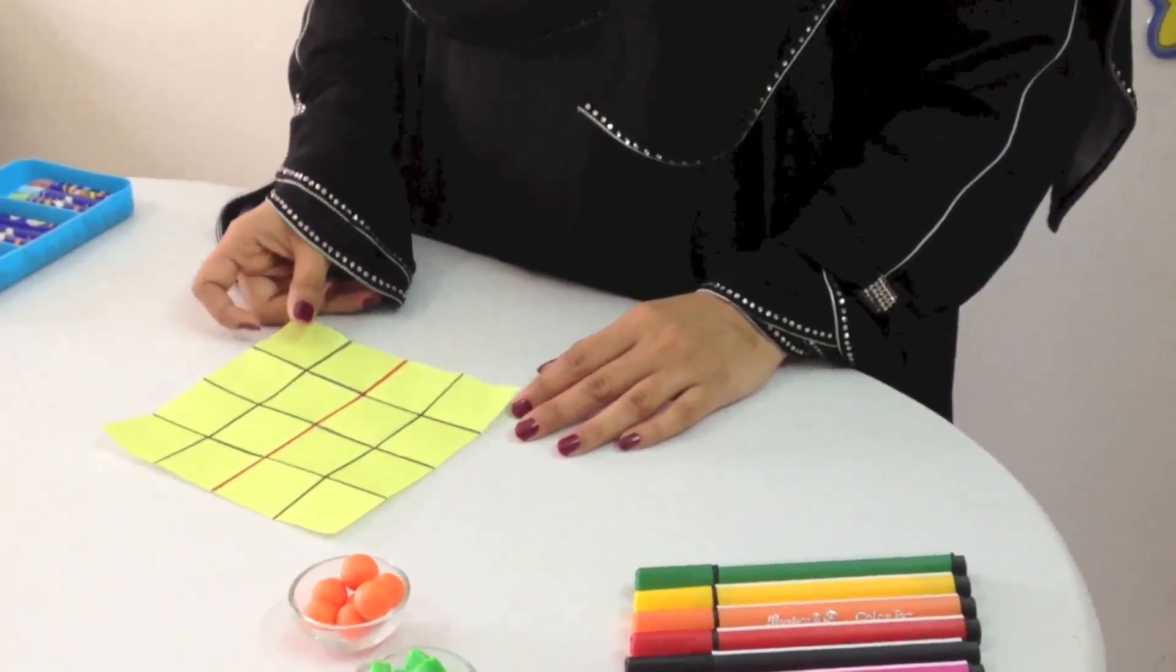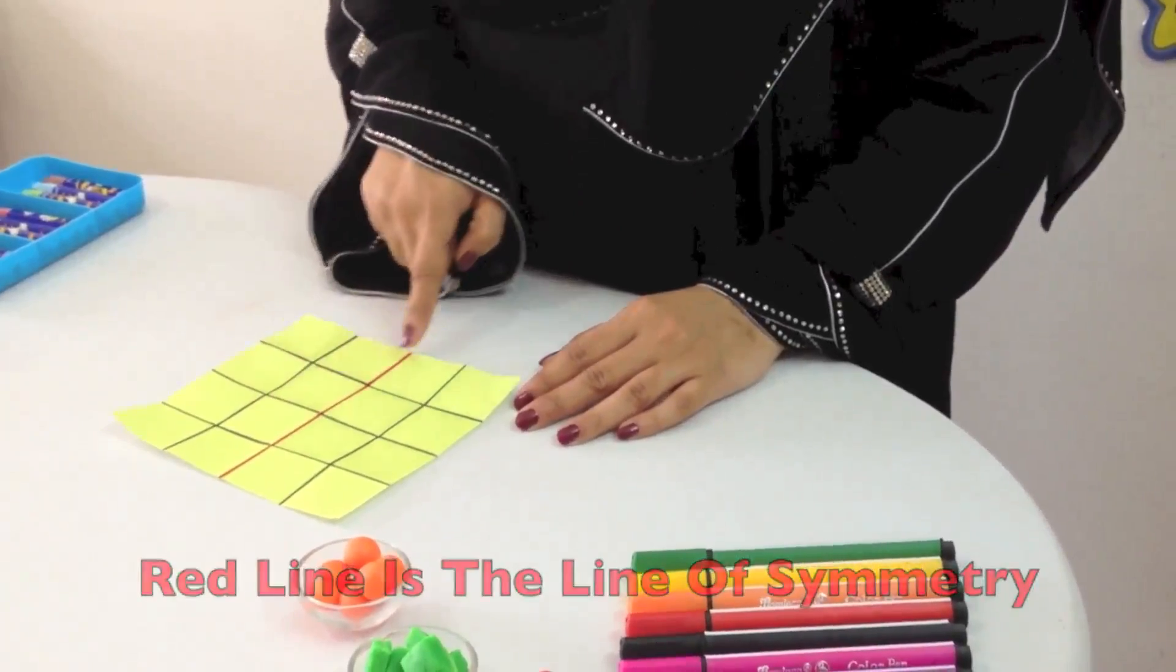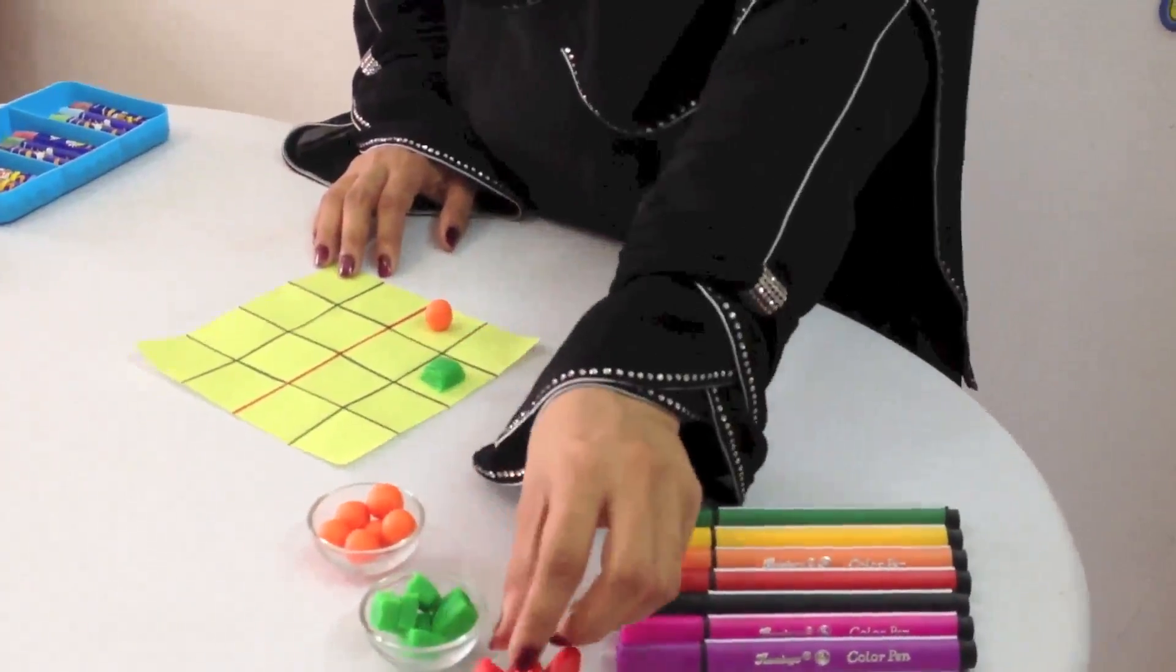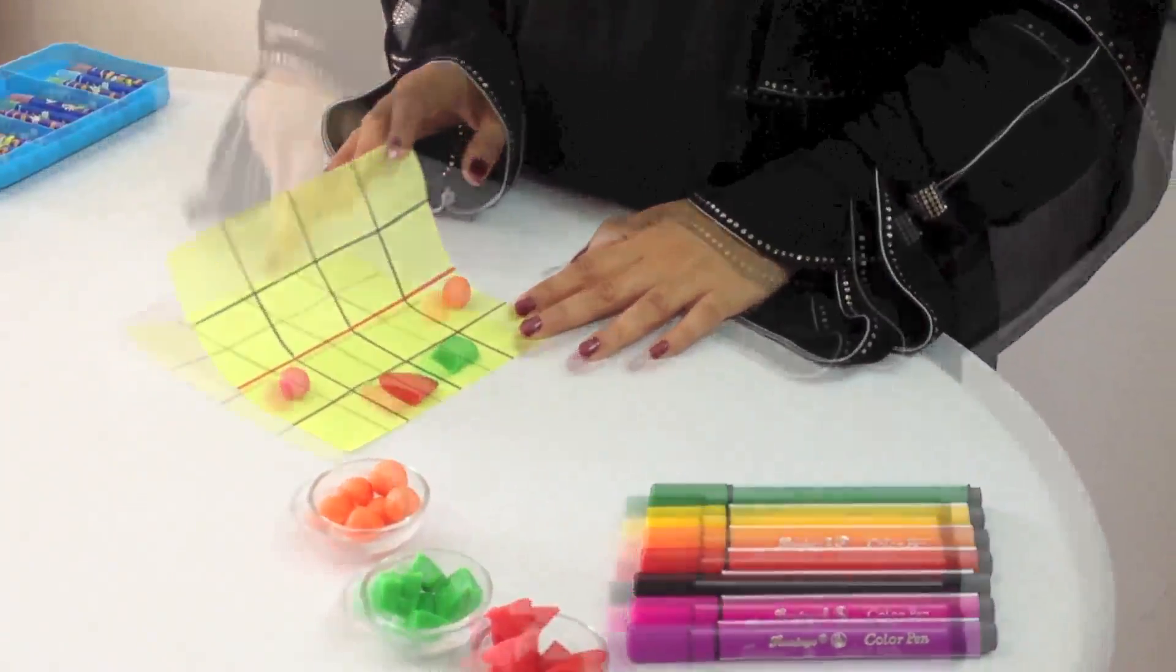To make a symmetrical pattern, we have taken this paper with grids on it, and this is the line of symmetry. On this side we have created a pattern. We will duplicate it on the other side.